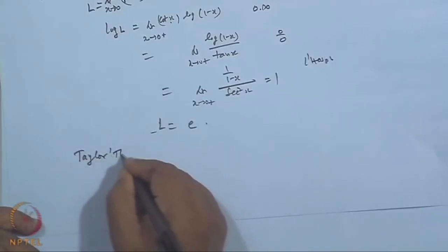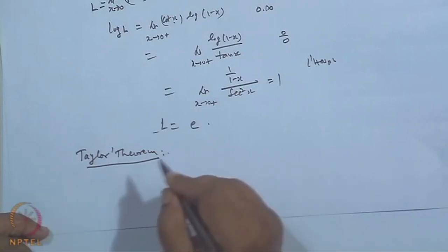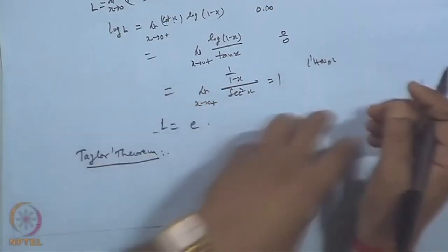Now let us come to Taylor's theorem. Taylor's theorem is an extension of the mean value theorem. The mean value theorem gives a relation between the function f and its first derivative — whether it is Lagrange's MVT giving [f(b) − f(a)]/(b − a) = f'(c), or the Cauchy MVT relating two functions f and g and their derivatives.